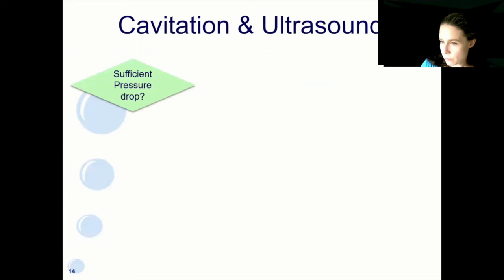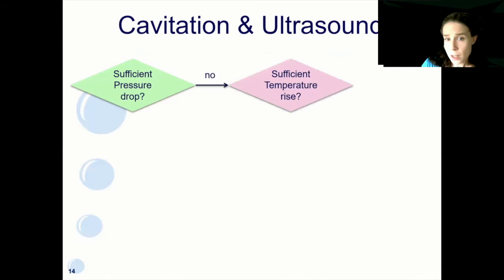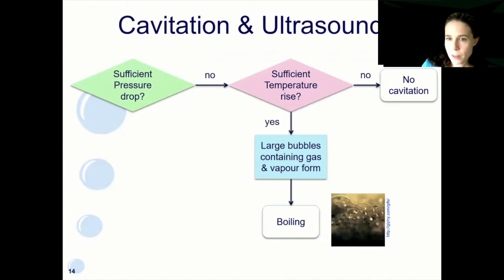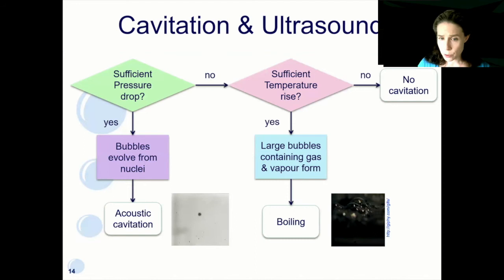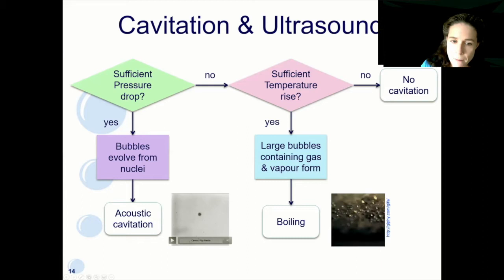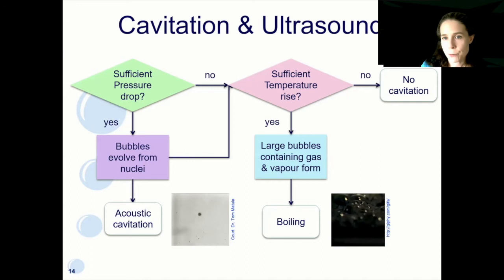We can think of this in terms of a flow chart. First: does the ultrasound provide a sufficient pressure drop for bubbles to form? If not, is sufficient energy being deposited for a temperature rise? If not, then there won't be any bubbles formed. If the pressure drop is insufficient but we do get enough heating, we'll tend to get large bubbles containing both gas and vapour forming — i.e., boiling. If the amplitude of the ultrasound is sufficient that when the pressure drops bubbles are able to evolve from the nuclei, then we will get acoustic cavitation. And of course, we may have a combination of both, getting boiling and acoustic cavitation together.